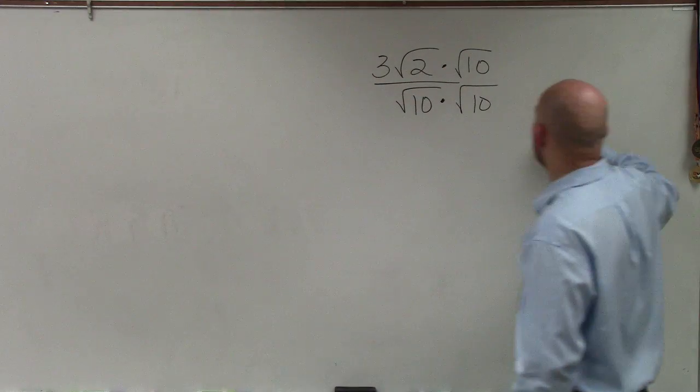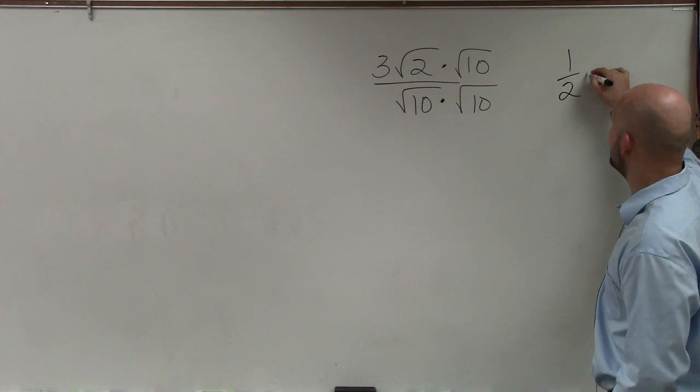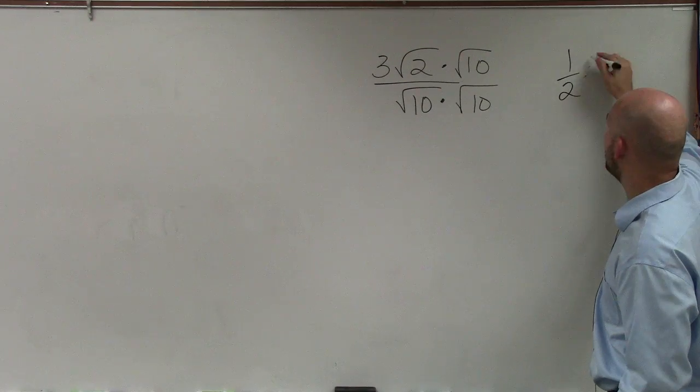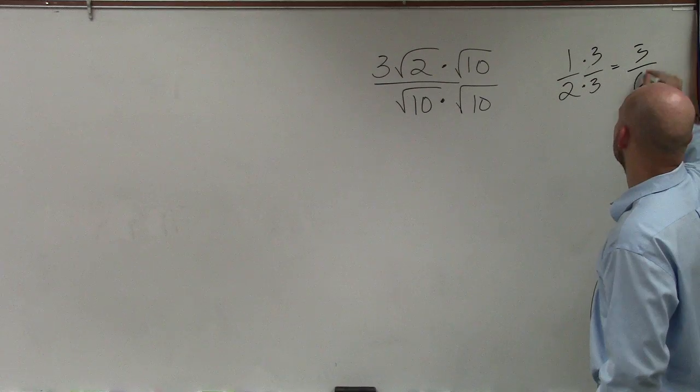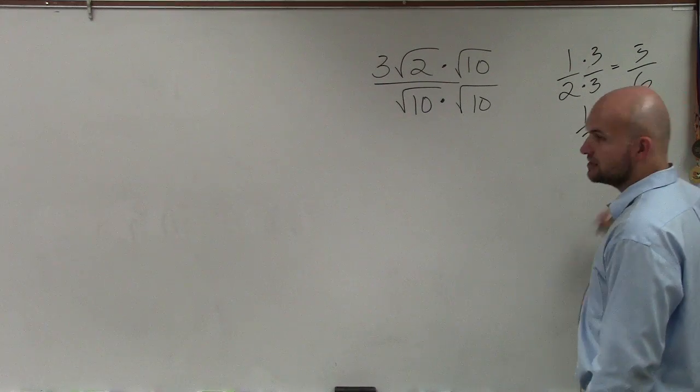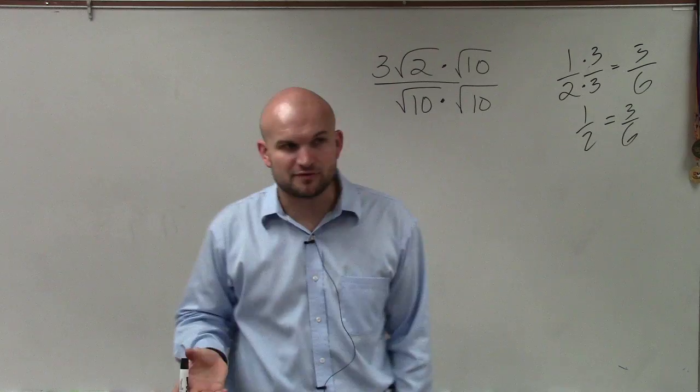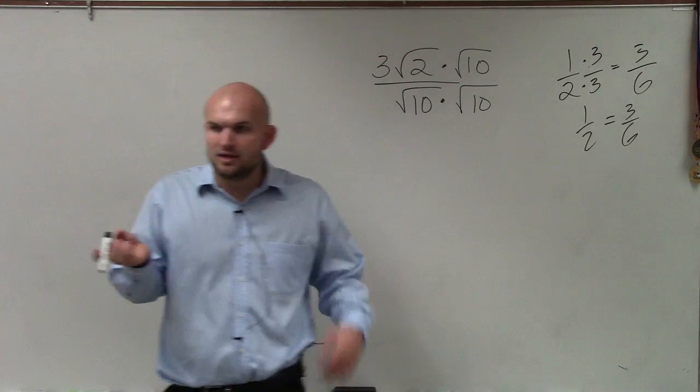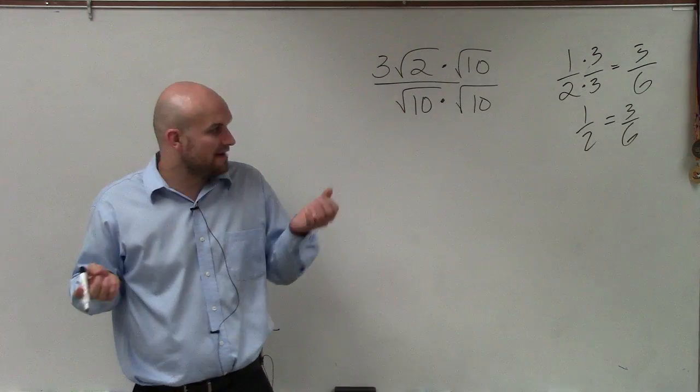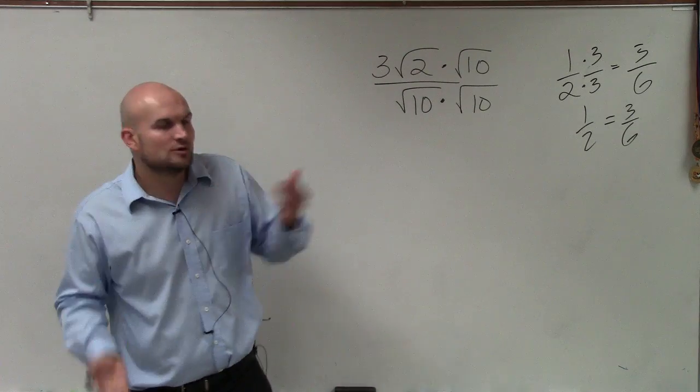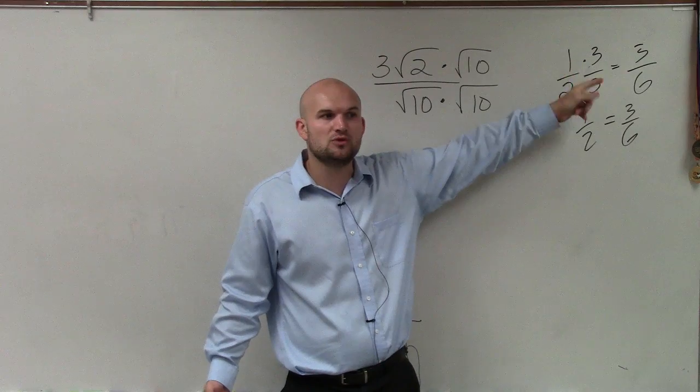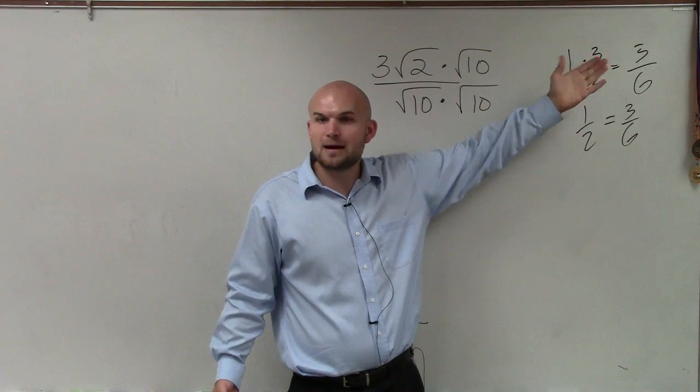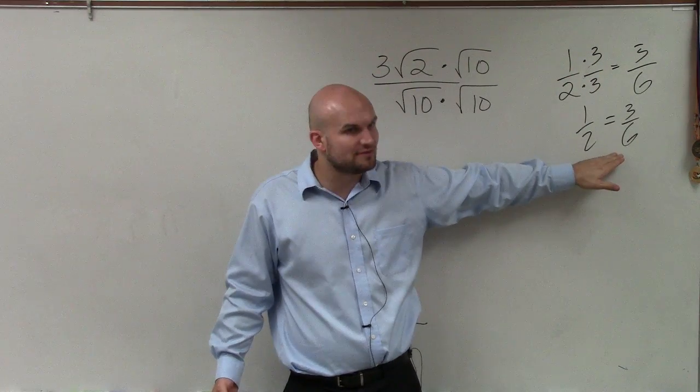Now, let's look at why that works. If I had the fraction 1 half and I multiplied 1 half by 3 over 3, I would get 3 over 6. Is 1 half equivalent to 3 over 6? Yeah. It's just broken up differently. It's just a different ratio. But the amount, the value of 1 half and 3 over 6, they're exactly the same. So as long as you multiply the same number on the top and the bottom, you produce equivalent fractions.